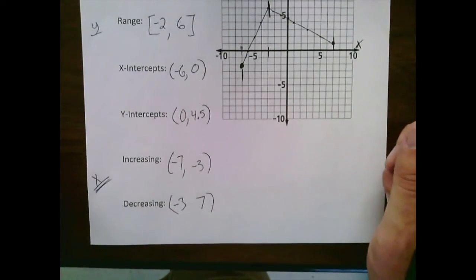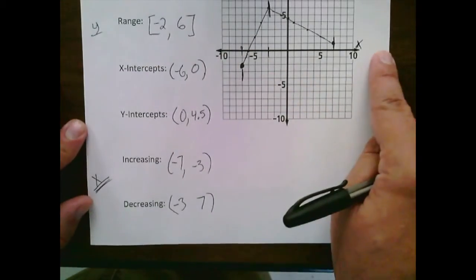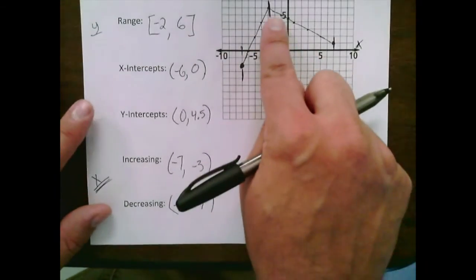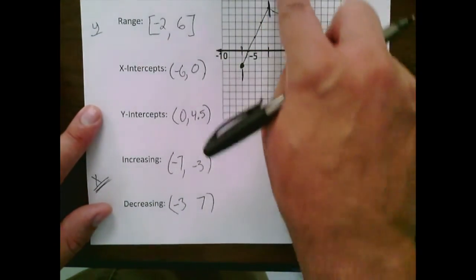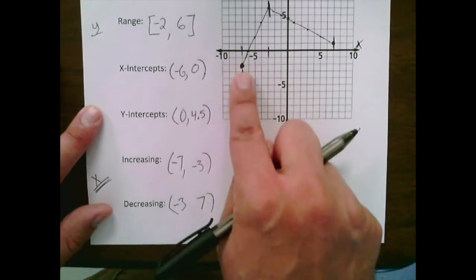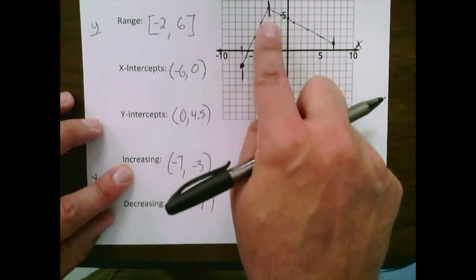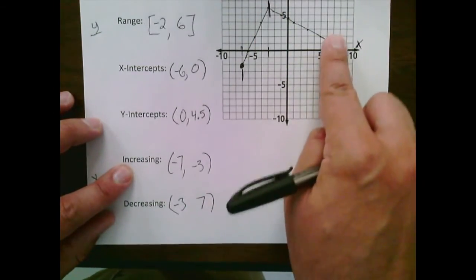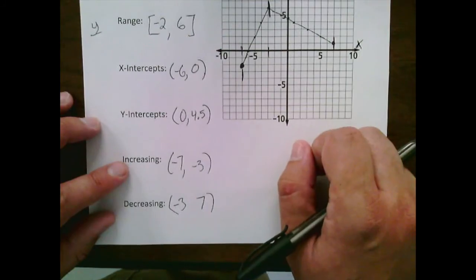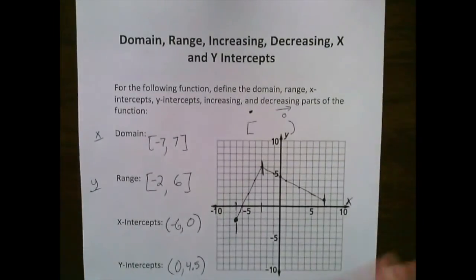Once it hits the peak at x equals negative 3, the function decreases all the way down to x equals positive 7. The tough part with increasing and decreasing is you only care about x — don't get trapped talking about y. Just identify: from what x-value to what x-value are you increasing or decreasing? That was a quick review on domain, range, increasing, decreasing, and x and y intercepts.